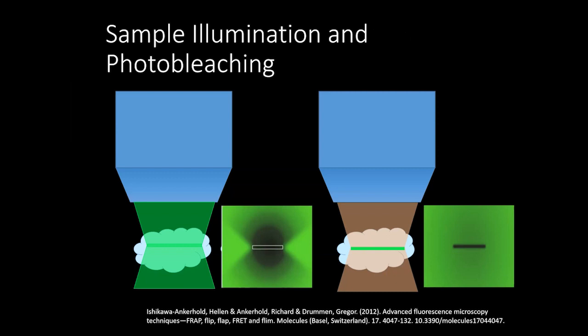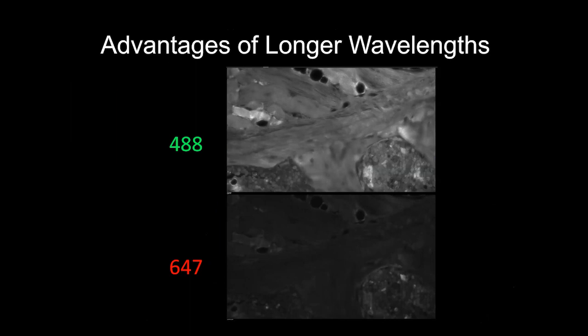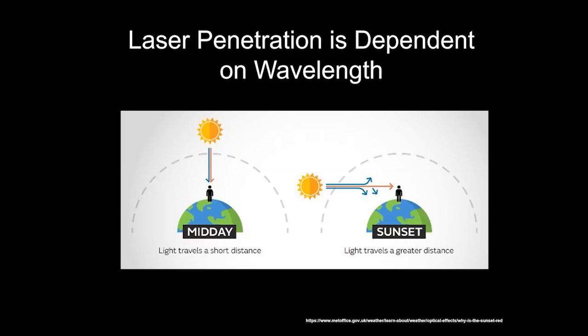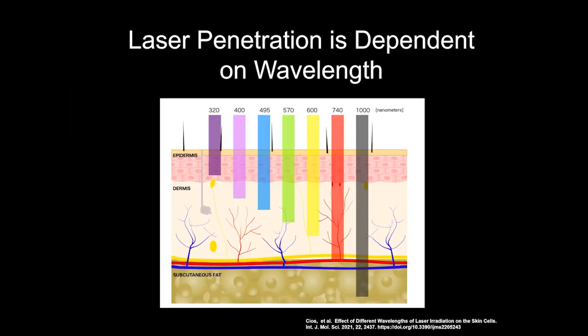Another advantage of longer wavelengths is less autofluorescence — many of you know that green fluorophores have lots of background autofluorescence, which is not the case in the red channel. And crucially, longer wavelengths penetrate biological tissue better because shorter wavelengths scatter. You see this in nature every day: the sky is blue at noon because blue light scatters, and sunsets are red because red light penetrates through more atmosphere. The same thing happens in your tissue.